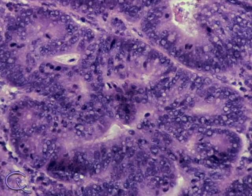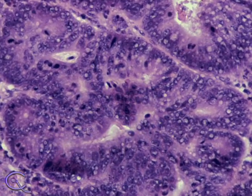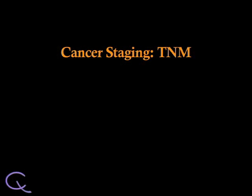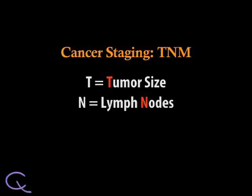One of the most common ways in which cancer is staged is known as TNM. T stands for tumor size, N for the involvement of lymph nodes, and M for metastases, or the presence of cancer at sites outside of its original location.